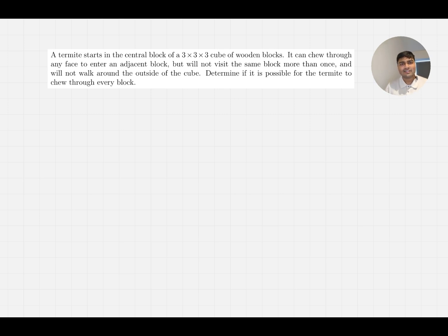We have a termite which starts in the central block of a 3x3x3 cube of wooden blocks. It can chew through any face to enter an adjacent block, but will not visit the same block more than once and will not walk around the outside of the cube. We want to determine if it is possible for the termite to chew through every block.